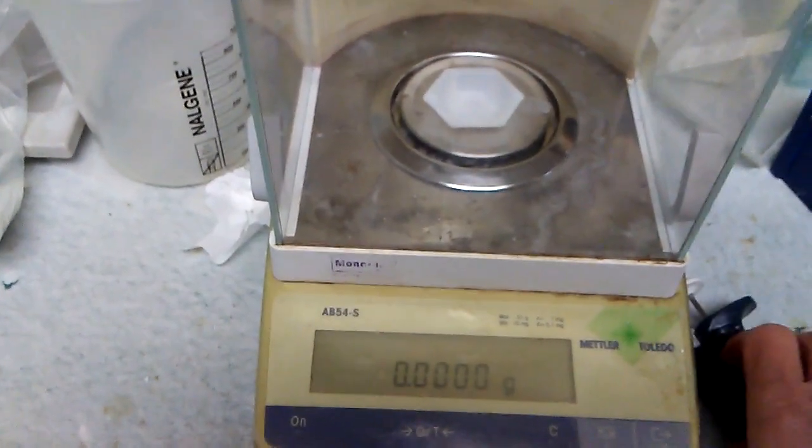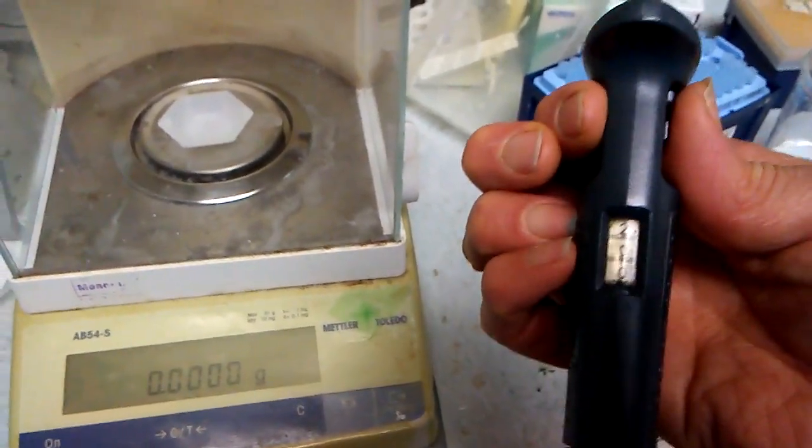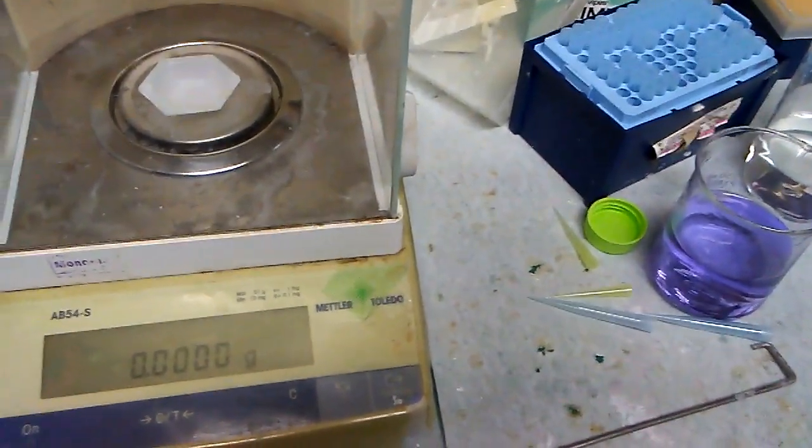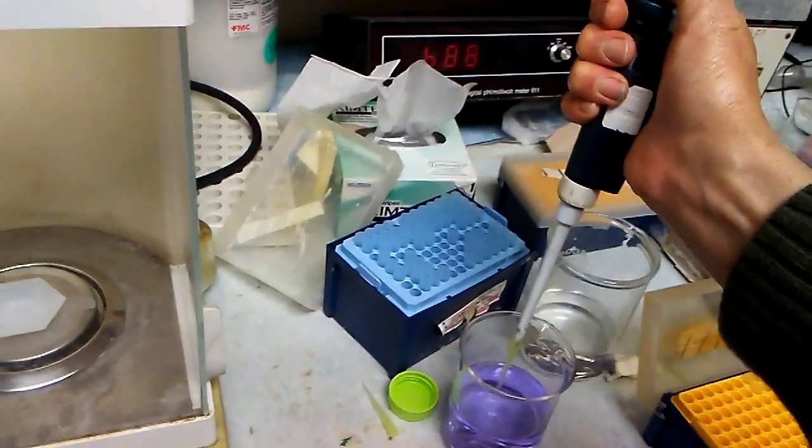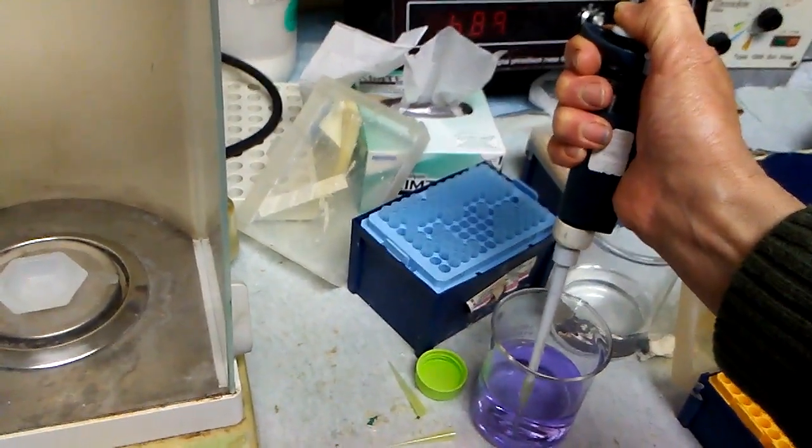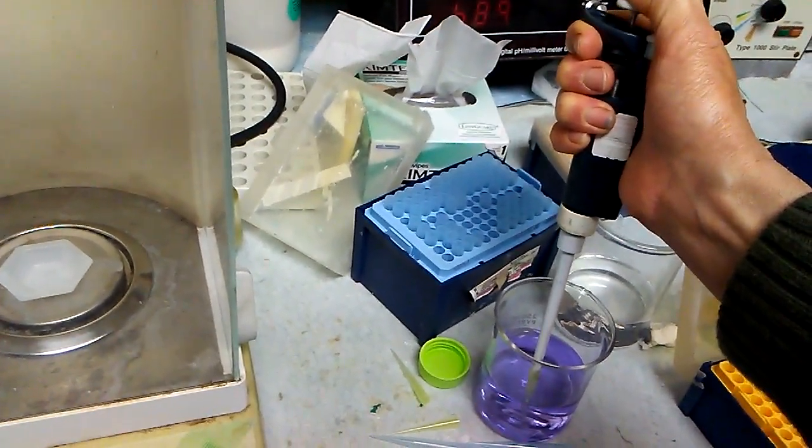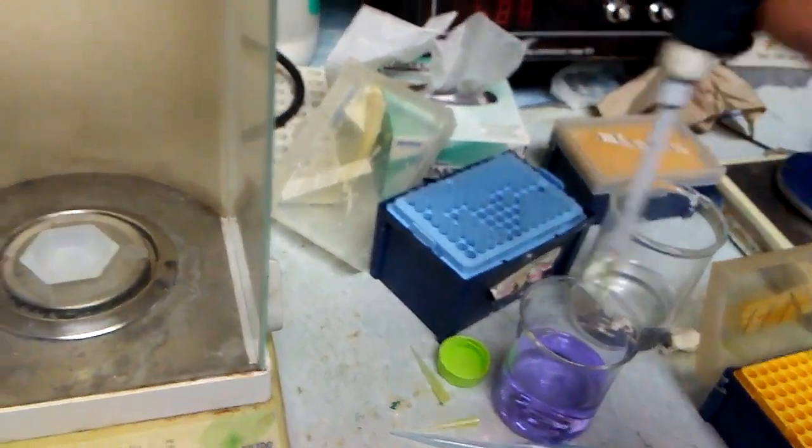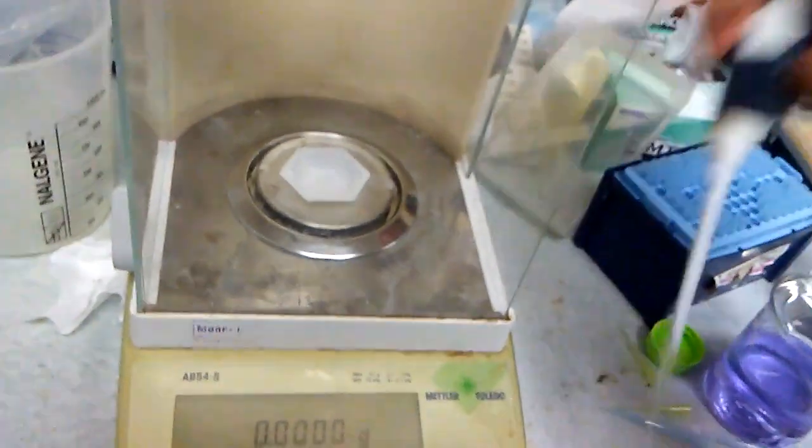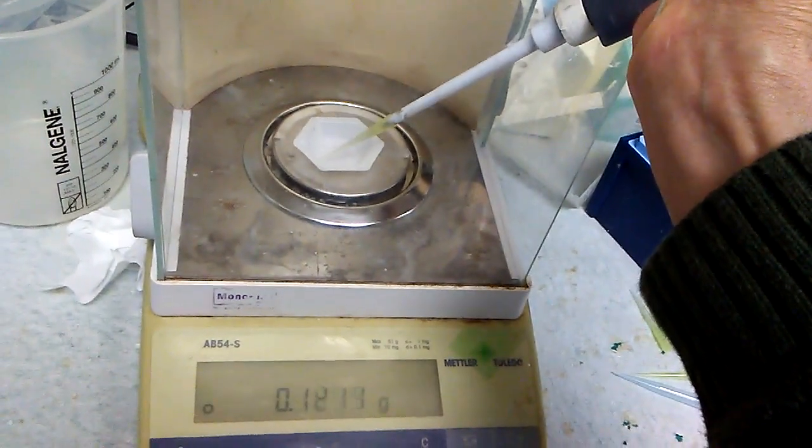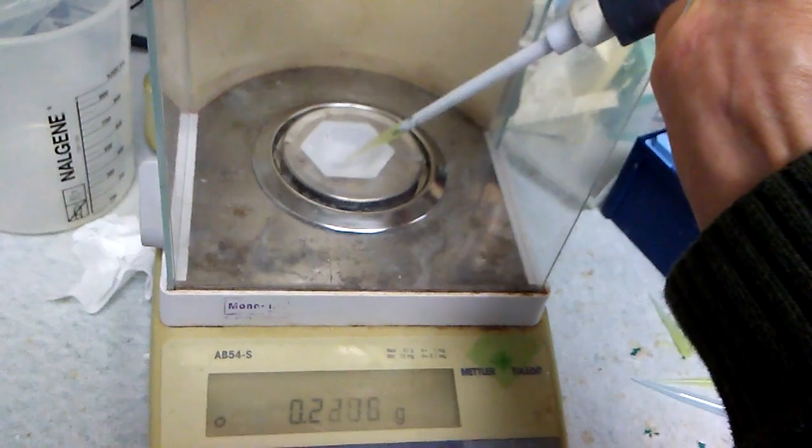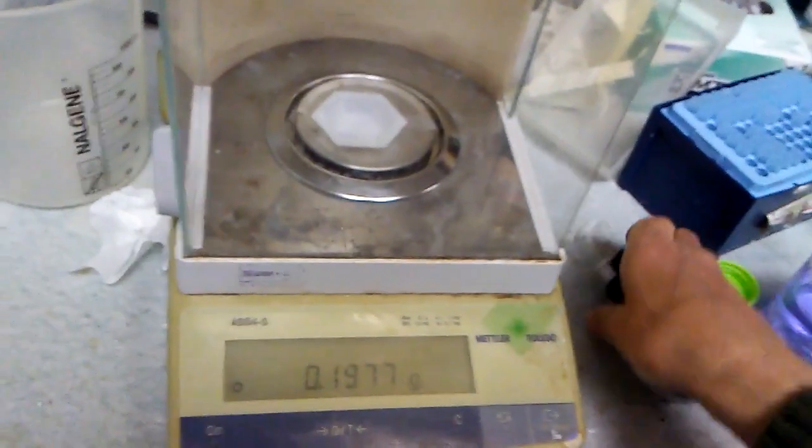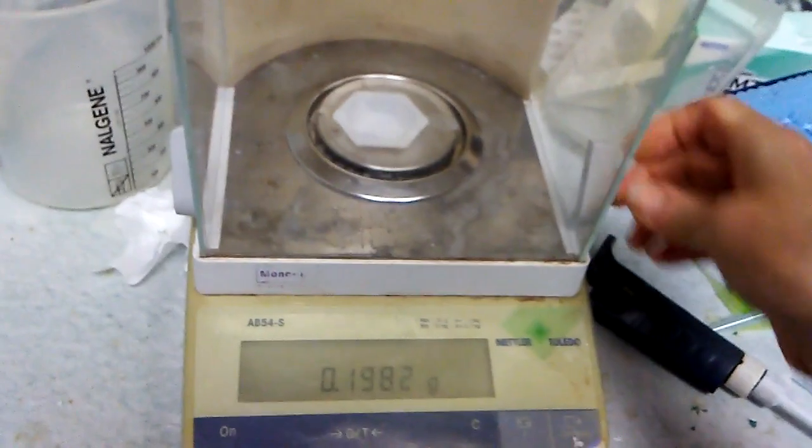So we're back in the balance room. Let's see how we did. Again, we'll try 200 microliters. Just carefully pipette that. So about 198, that's pretty good.